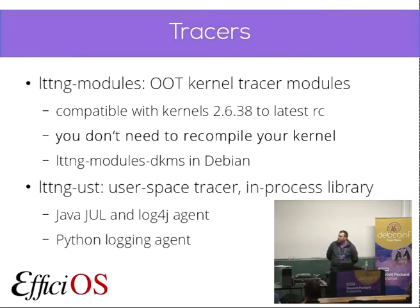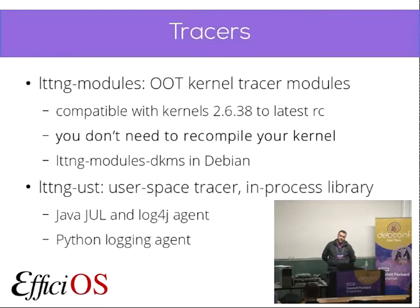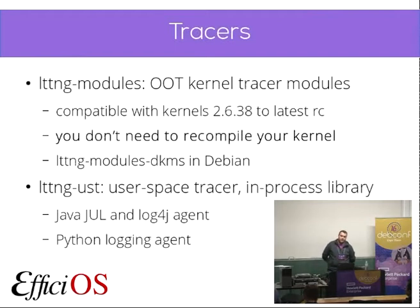The two tracers that are part of the LTTNG project are first LTTNG modules, which is an out-of-tree kernel tracer. It is compatible with kernels starting from 2.6.32 up to the latest RC kernel. You do not need to recompile your kernel — that's something that's been following us for a while because the first versions of LTTNG required heavily patching kernels. You just need to build some out-of-tree modules and then load them to the kernel. You can also add them as built-in modules if you roll your own kernels.